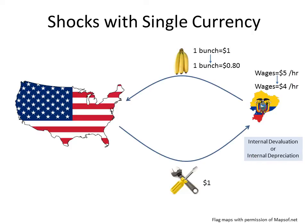That works fine if wages and the price of bananas respond equally quickly. The problem happens when the price of bananas falls quickly but wages take much longer to fall. No one likes it when their wages fall. As a result, there can be labor unrest and strikes, and there may be a lot of unemployment in the time it takes for wages to fall from $5 an hour to $4 an hour. That's an uncomfortable process — no country likes to go through it.